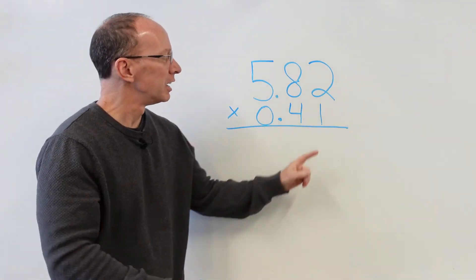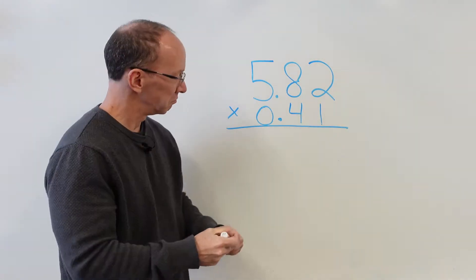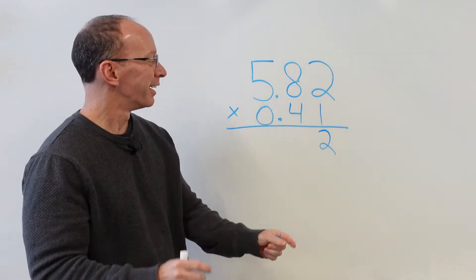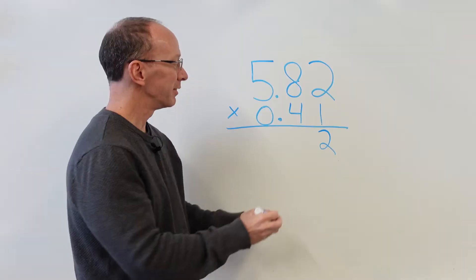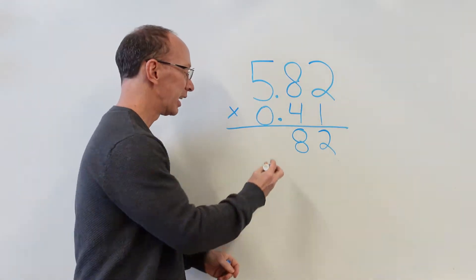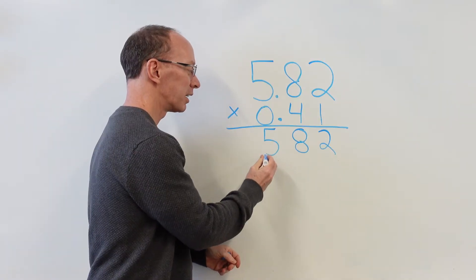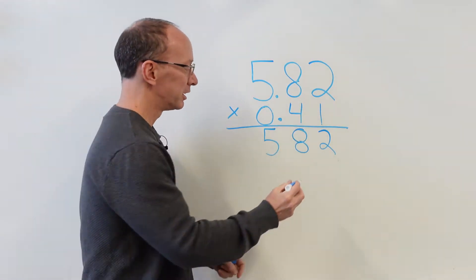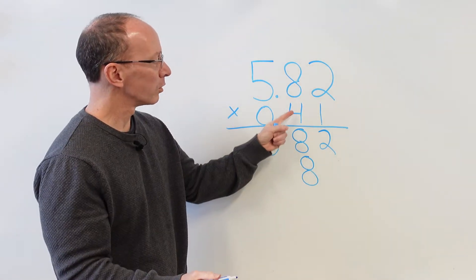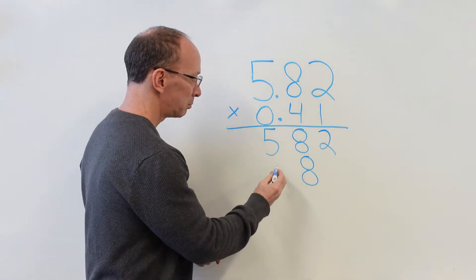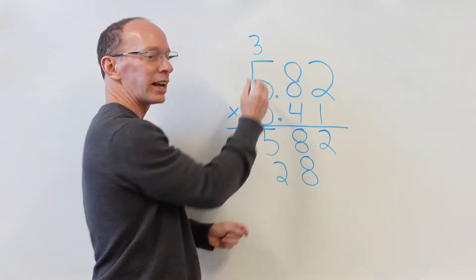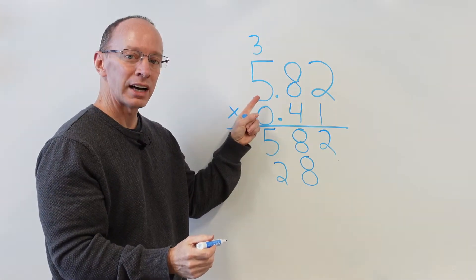So let's just start right here. 1 times 2, you got it, 2. You guys are math ninjas. 1 times 8, 8. 1 times 5, you got it. You guys are pros on this. 4 times 2, you know it. 4 times 8, 32. Put the 2 right there, carry the 3 up there. We're going to add that 3 in a little bit.